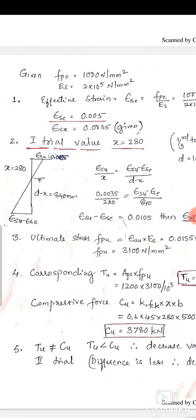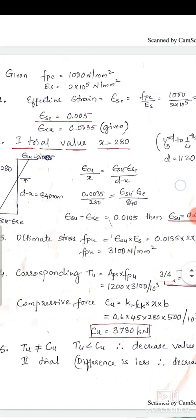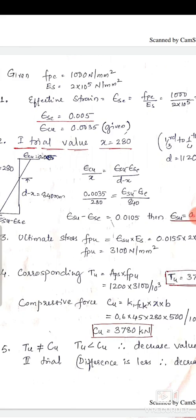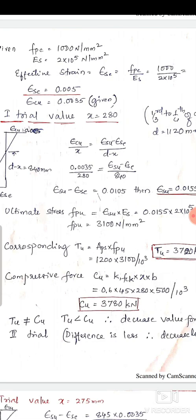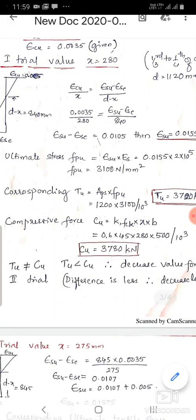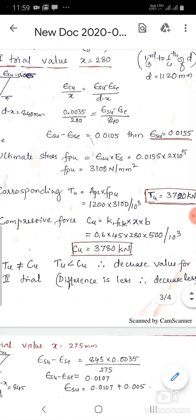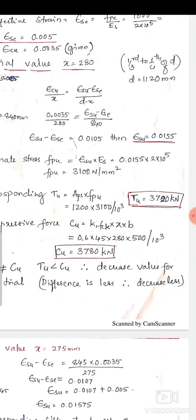The second step is to assume a trial value for the neutral axis depth. For the first trial, x = 280 mm, which is approximately one-quarter of the effective depth 1120 mm. From the strain diagram, ε_cu = 0.0035 at the top. Using similar triangles: (ε_su − ε_se) / (d − x) = ε_cu / x, giving ε_su − ε_se = 0.0105, so ε_su = 0.0155.